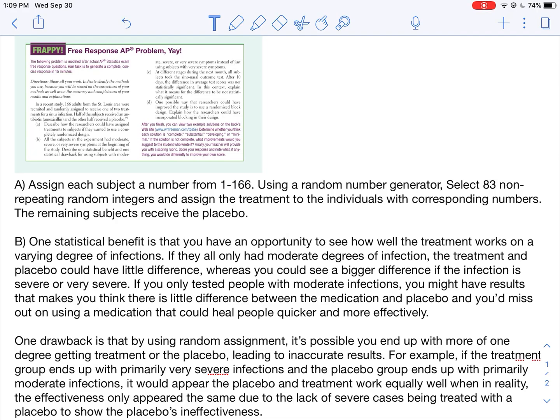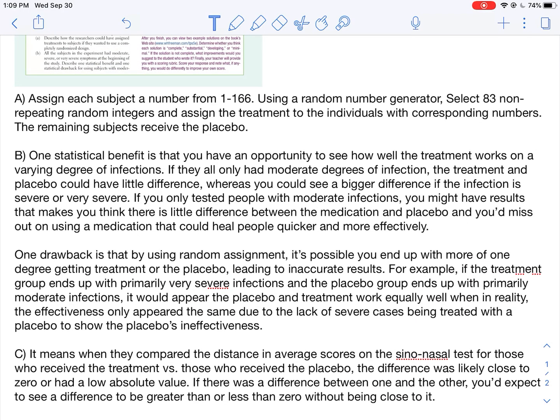I mentioned the drawback is that it's possible using randomized design that you end up getting a lot of people with one degree or another, it becomes disproportionate. So I said for example if the treatment group ends up with primarily very severe infections and the placebo group ends up with primarily moderate infections, maybe you would think that the placebo and the treatment work equally well when in actuality effectiveness only appeared that way because you didn't have any severe cases taking the placebo. So that's something you want to be aware of too with completely randomized design. It is possible that you could end up with disproportionate people getting the treatment on either end, especially in this case where you have specific degrees of infection that can make a big difference.